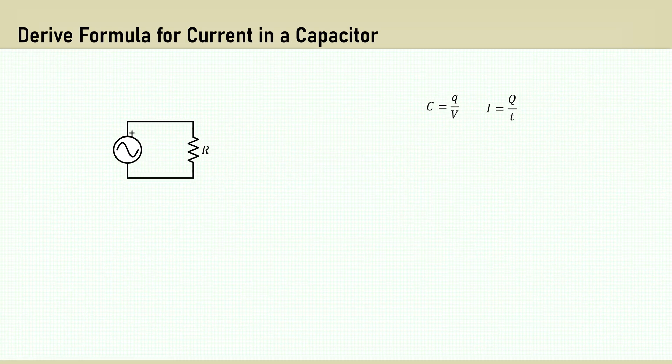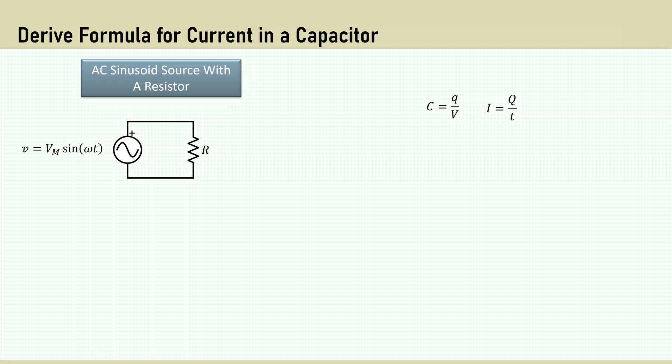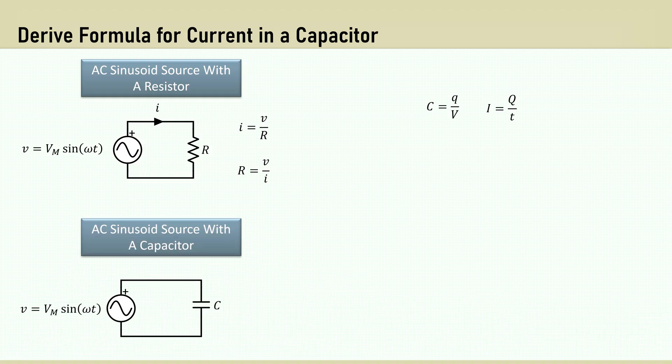As stated, we need to determine the reactance, which is the opposition presented to the alternating current. Consider a resistor across an AC sinusoidal voltage source. If you're not familiar with that formula, check out the formula for the periodic sinusoid video. The current I from Ohm's Law is the voltage V over the resistance R. And of course, the resistance is the voltage over the current.